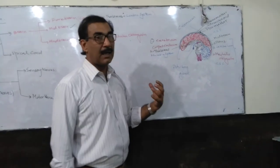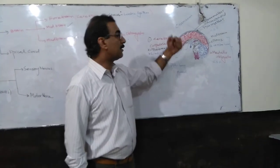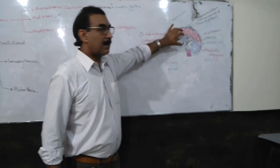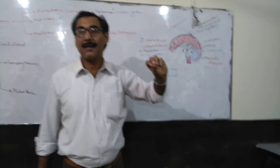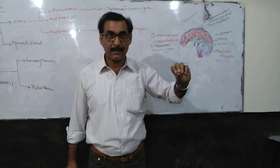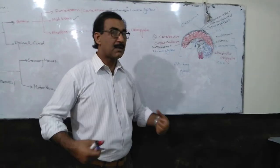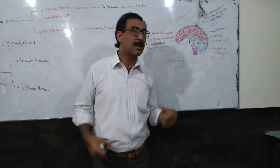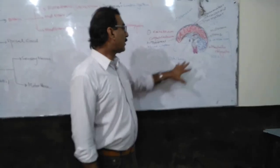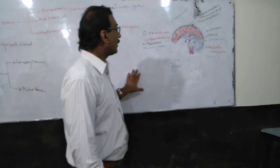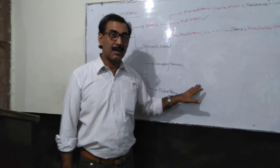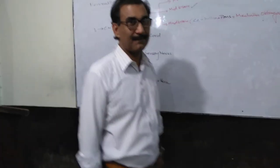Those nerves which connect the body with your brain are called cranial nerves. The nerves which coordinate the spinal cord are called spinal nerves. This is all about the central nervous system. We will discuss the peripheral nervous system in the next lecture. Thank you very much.